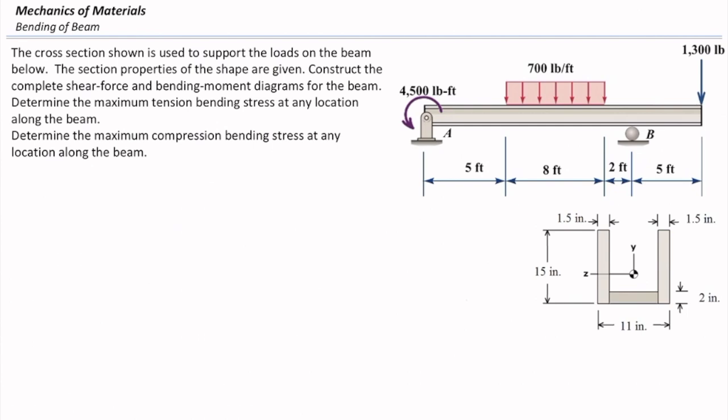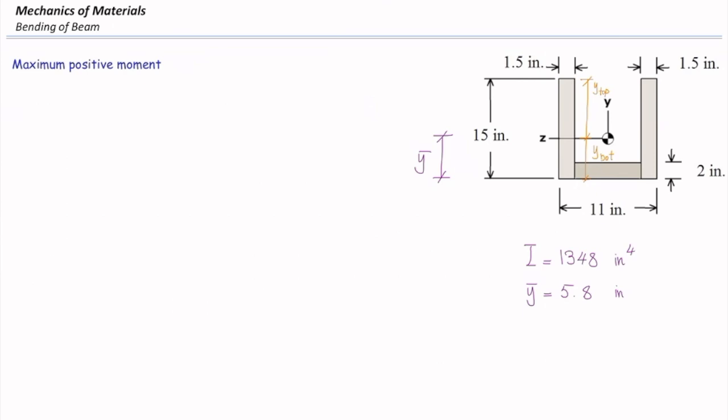The cross-section of this beam is shown. So the moment of inertia is 1,348 inch to the fourth, and distance of centroid to the bottom part is 5.8. Assume that these are provided, so you don't need to determine those properties.